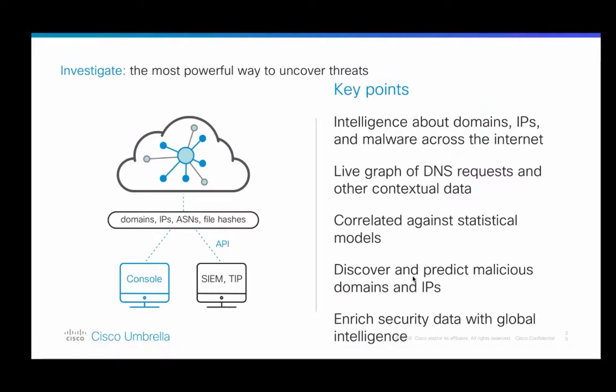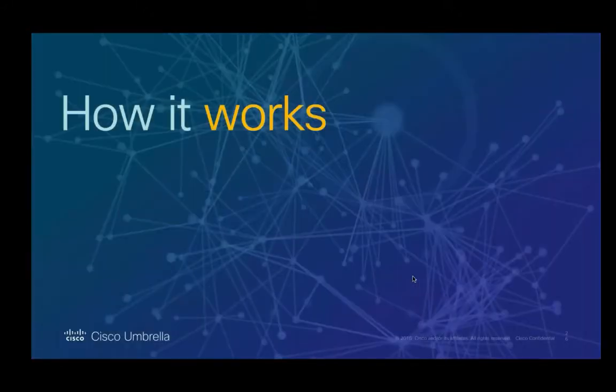With Investigate, you actually get that global view — intelligence around domains, IPs, and malware and how they all interconnect across the internet. We do that by providing a live graph of DNS requests and other contextual data correlated against Umbrella's statistical models. You can use that data to discover and predict malicious domains and IPs in attacker infrastructure before they're actually able to target you. Because this is available at either a web-based console or a real-time REST API, you can enrich the security data you already have in your system with our global intelligence and plug the API into systems like Anomaly.